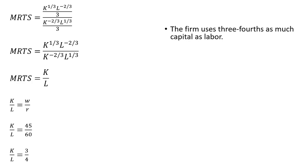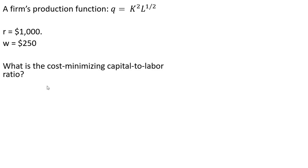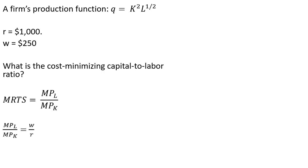Let's do one other example. Here's a slightly different production function with slightly different prices for the inputs. What is the cost minimizing capital to labor ratio? Same idea: we're going to get the marginal rate of technical substitution and set that equal to the wage divided by the price of capital.